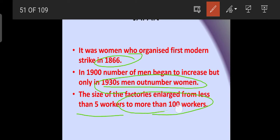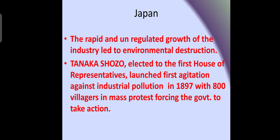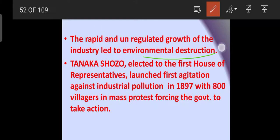The size of factories also enlarged — from fewer than five workers to more than 100 workers. The rapid and unregulated growth of industry led naturally to overuse of natural resources and deterioration of environmental conditions, resulting in environmental destruction.